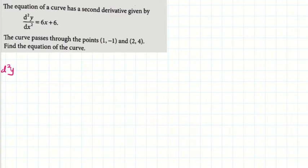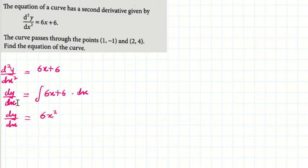To begin with, when you integrate your d²y/dx², which is given to be 6x + 6, you'll get dy/dx. So dy/dx is equal to integral of (6x + 6)dx.